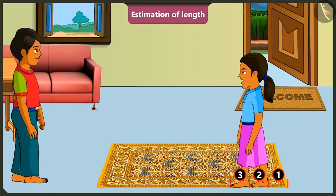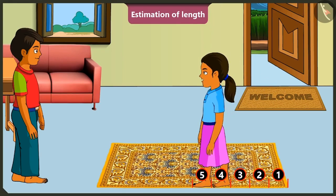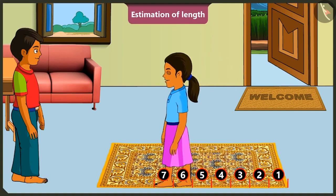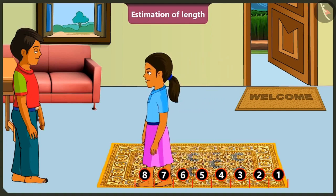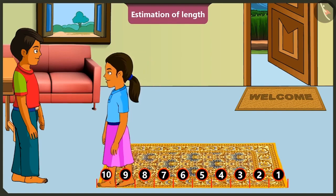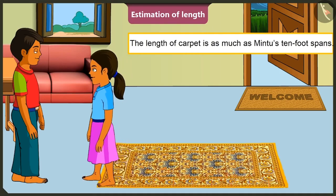Now, I walk through the length of the carpet. Four, five, six, seven, eight, nine, and this is ten. The length of this carpet is as long as my ten feet.